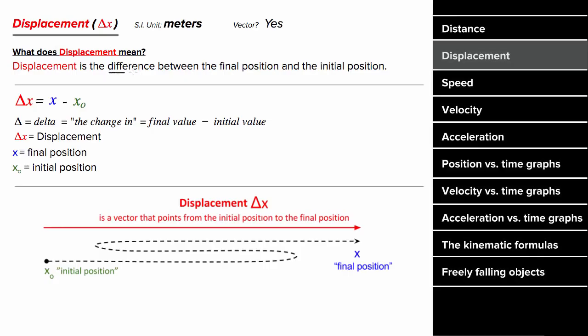What does displacement mean? In physics, displacement is the difference in position. So if an object went forward, then backward, then forward again, the displacement could be represented with an arrow that points from the initial position all the way to the final position.